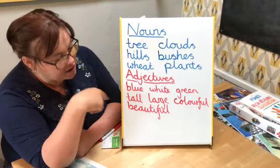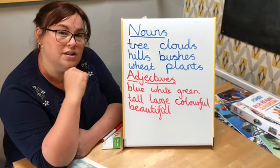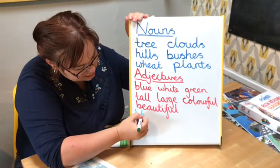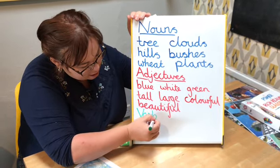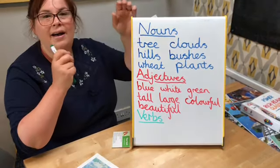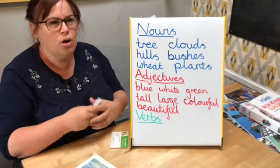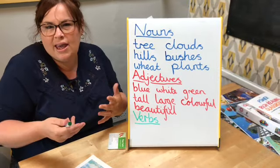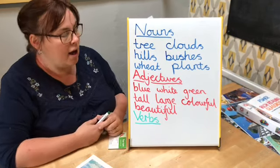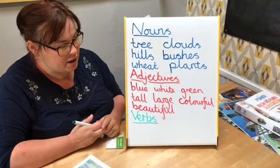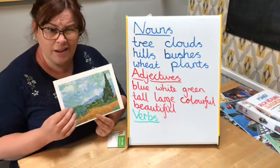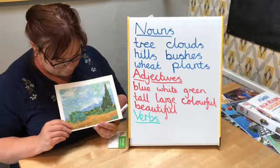Okay, welcome back. I've added a few more adjectives to my list. Have you got some? Brilliant. The last word class we're going to look at are verbs. Now we usually say that verbs are action words — words that tell us what we're doing: walking, sitting, reading, thinking, dreaming. We're going to be using the -ing suffix with our verbs today. So I'm going to have a look at my picture. I think this might be a bit tricky, but we'll manage.